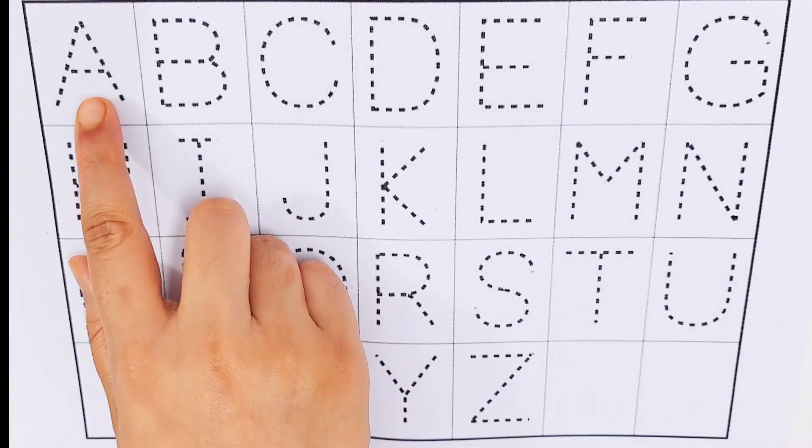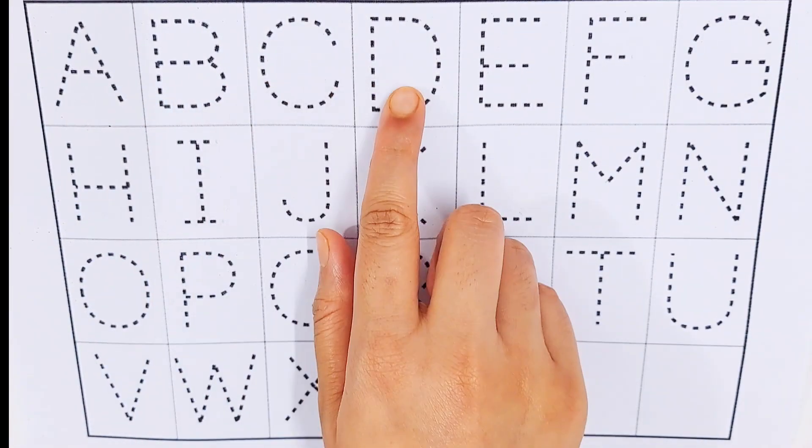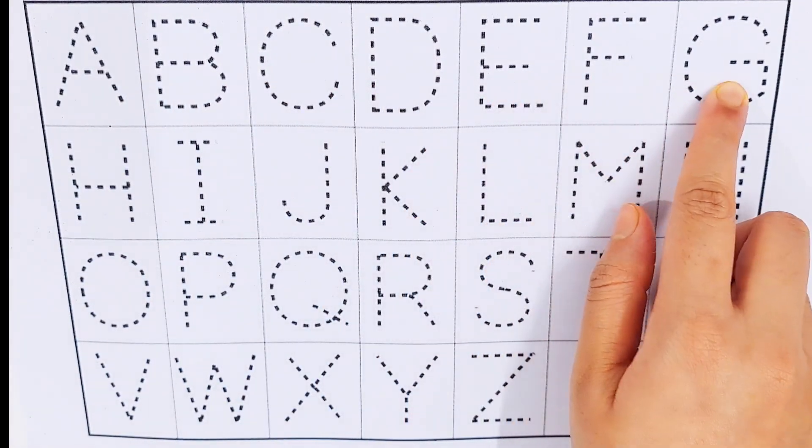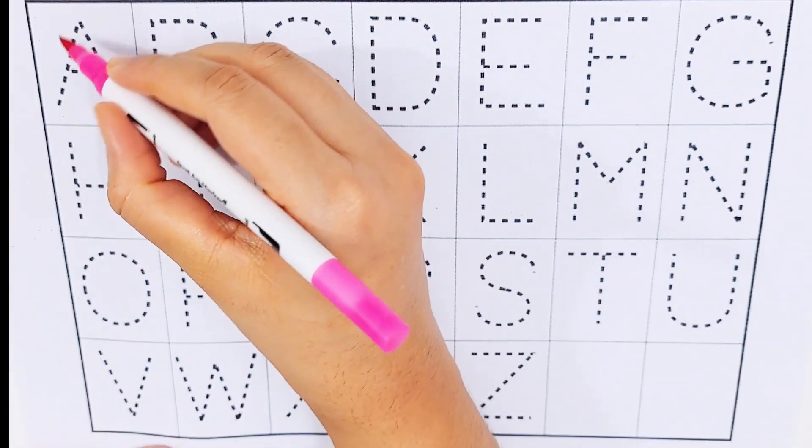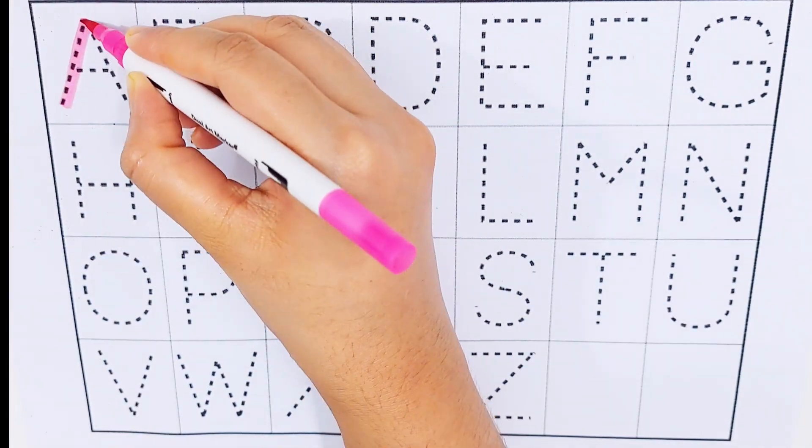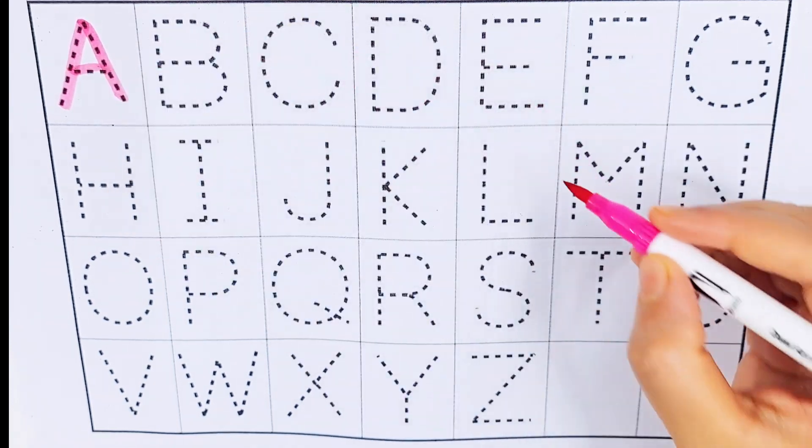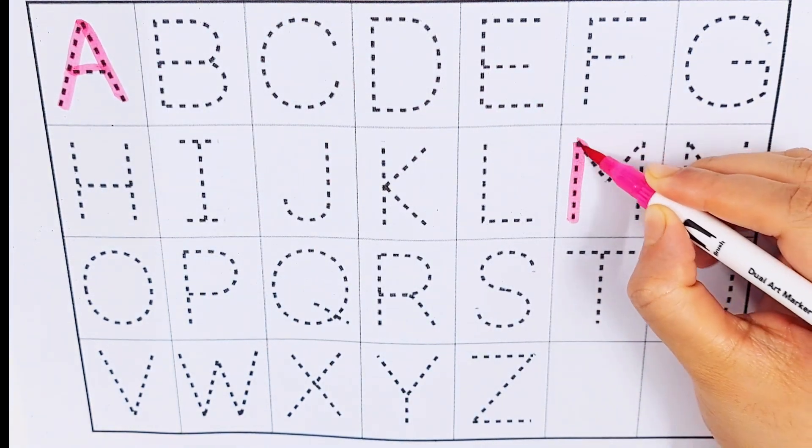Let's learn some alphabets. A B C D E F G. Purple color. A A for elevator, M M for man, S S for star, W W for window.